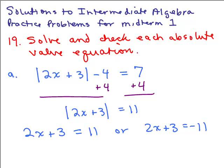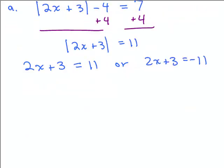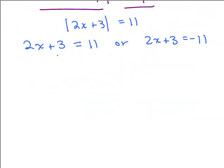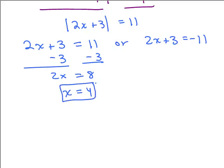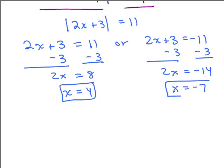Now we just solve each of these. Subtract 3 from both sides: 2x is 8, then divide by 2 to get x equals 4. And same thing over here — subtract 3 from both sides, then divide both sides by 2 to get x equals negative 7.